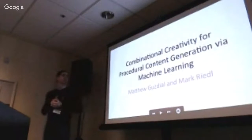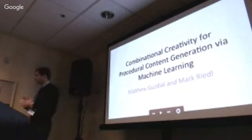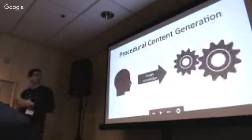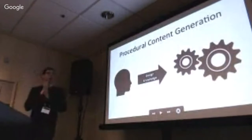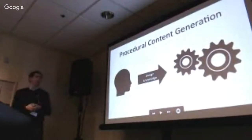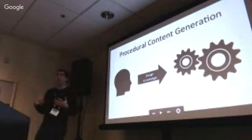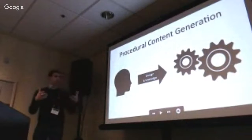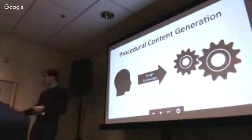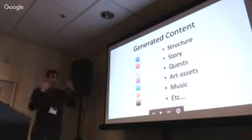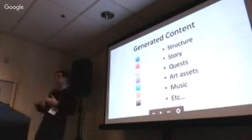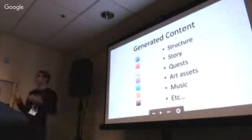The first bit is procedural content generation. The big idea is that some human designer takes their expert game design knowledge and inputs it into an algorithm. That algorithm is then used to produce content — things like game structure such as levels or puzzles, story, quests, art assets, or any content you might want for your game.